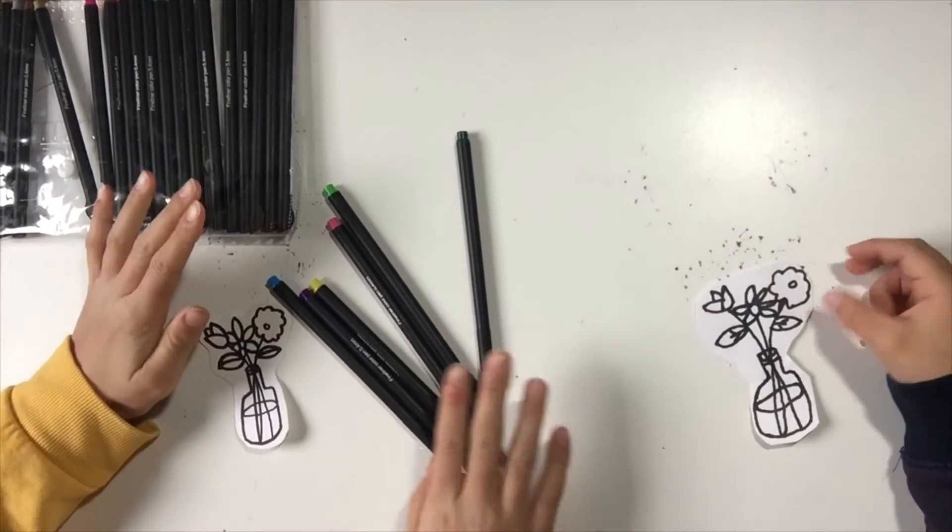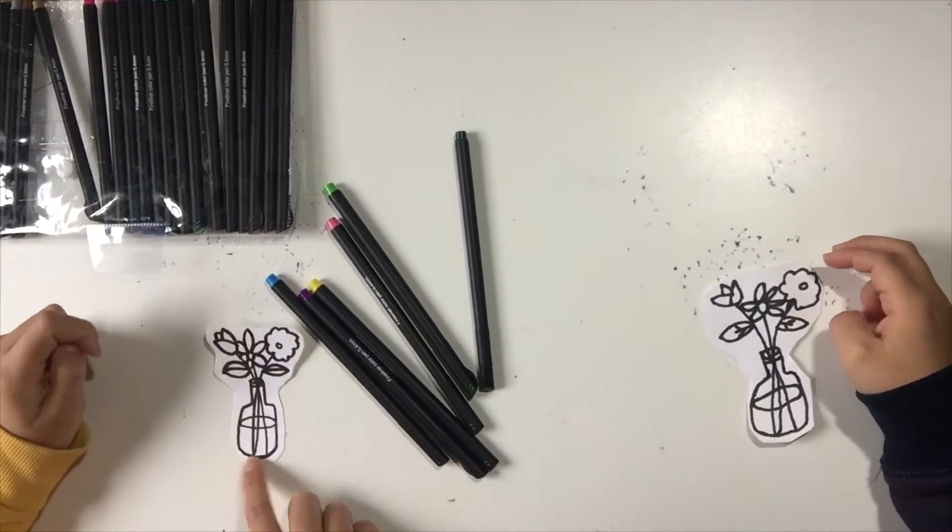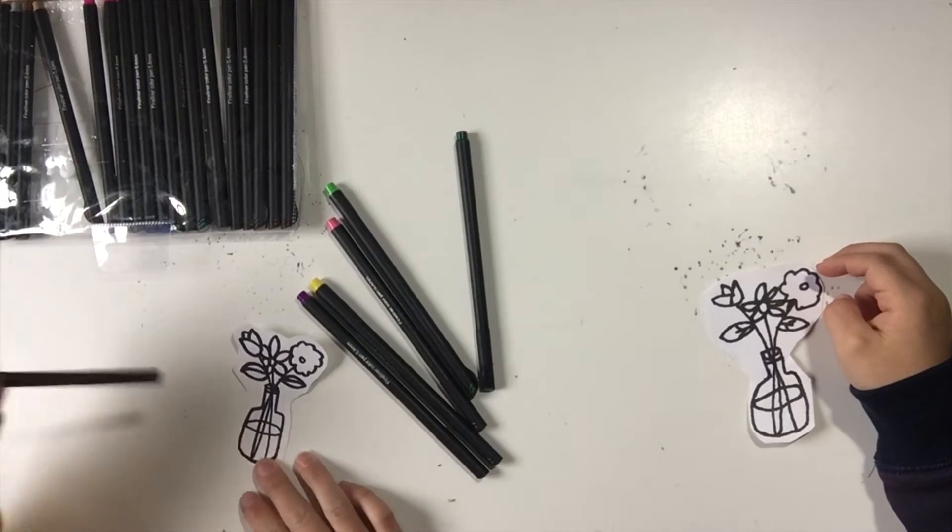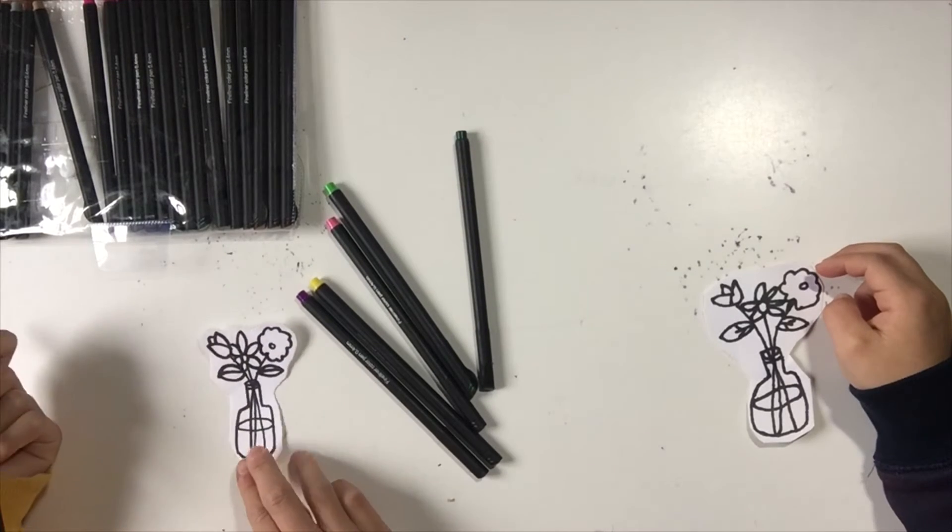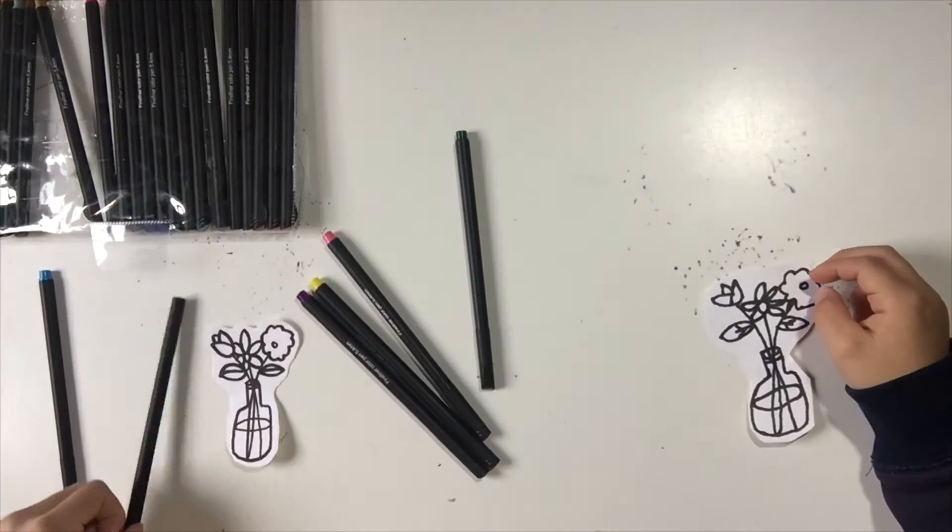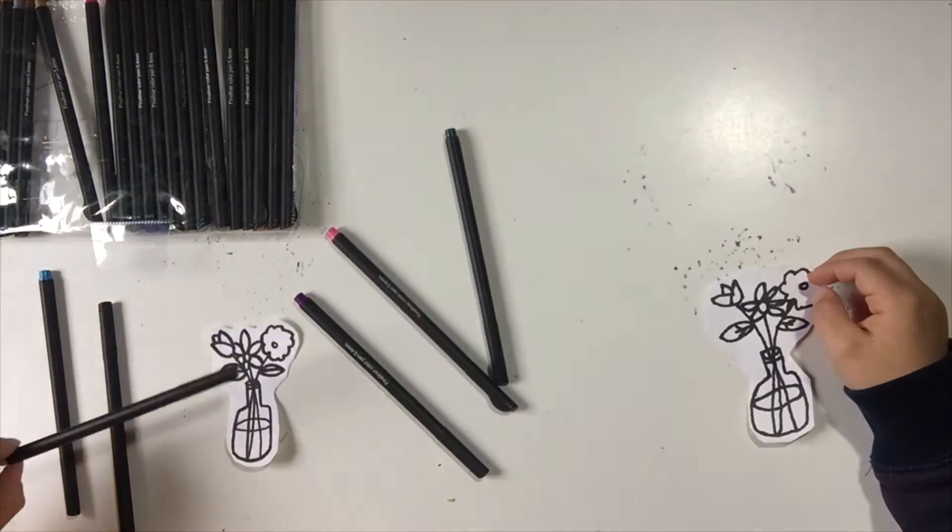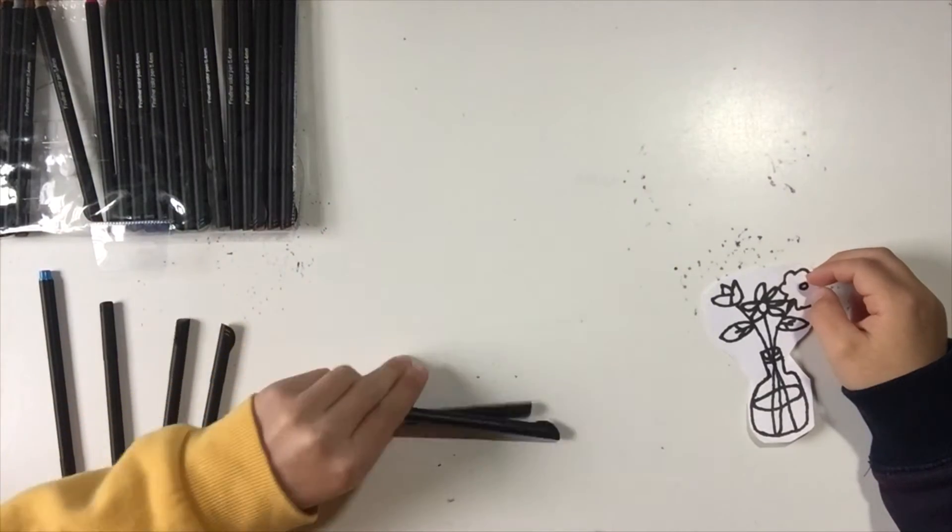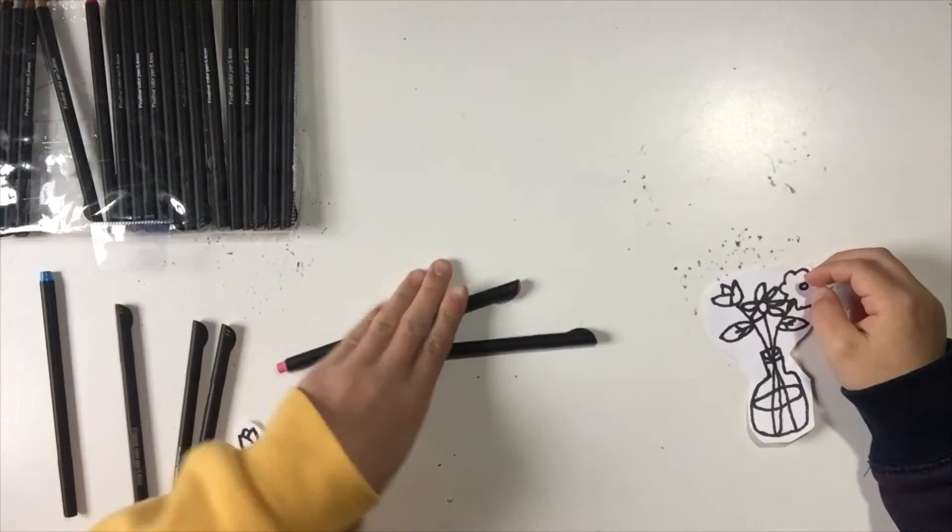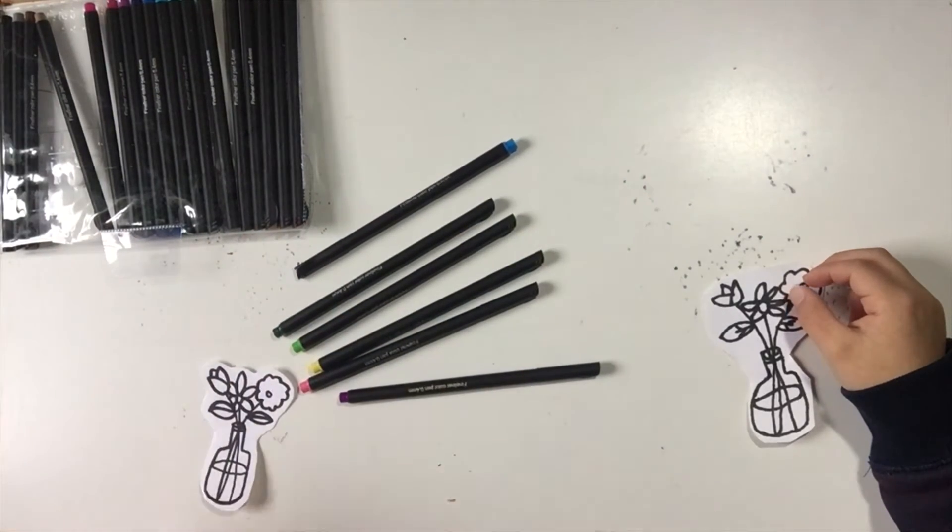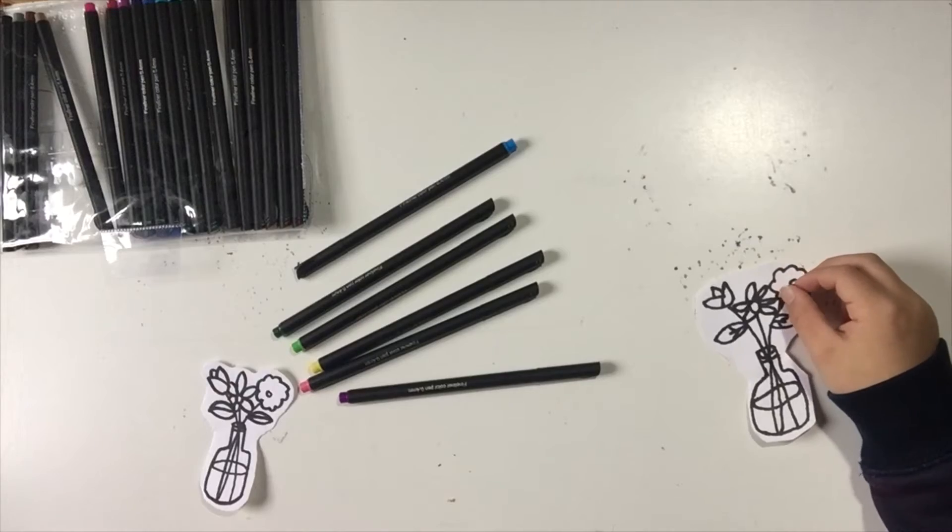We forgot one thing, we forgot to color it. So we're going to do that now. We're going to use blue for the water, the inside, nothing for the vase because you can like see through it, so it's clear. And we're going to have green for the petals, yellow for the inside of the flowers, more green for the petals, and a few different colors for the flowers. You can make your flowers any color and any shape. Okay, let's start coloring.